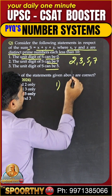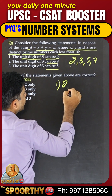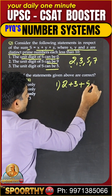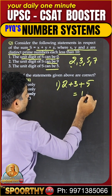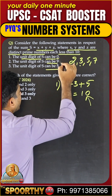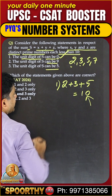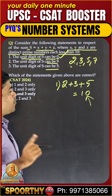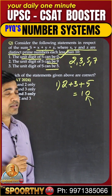How to get unit digit 0? Take 2 plus 3 plus 5. The sum equals 10 — yes, ending with 0. So the first statement is correct.